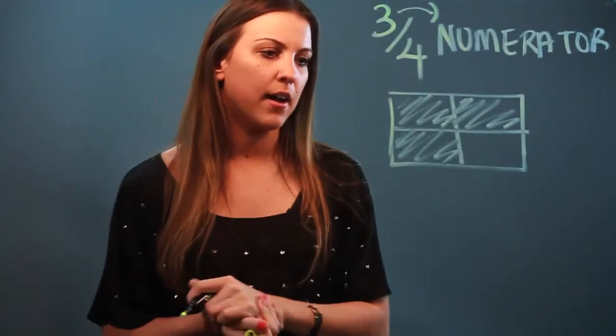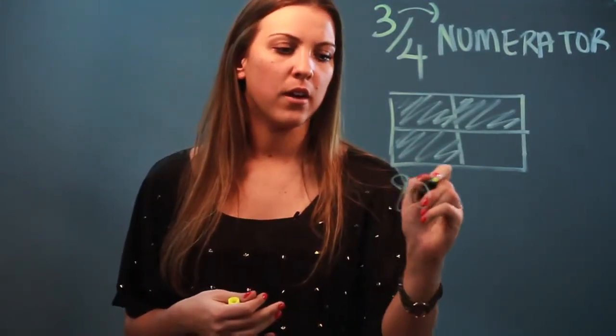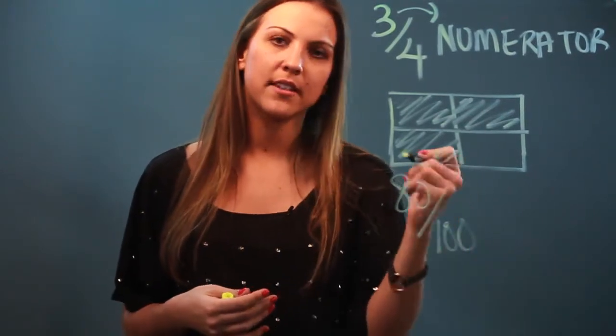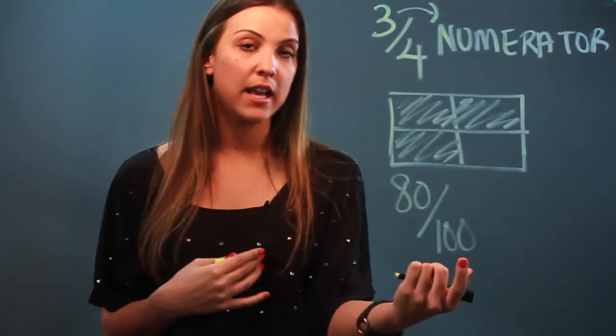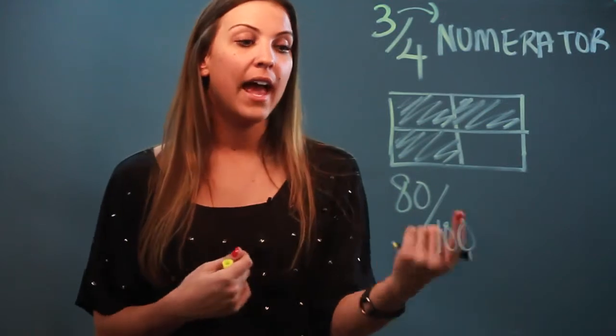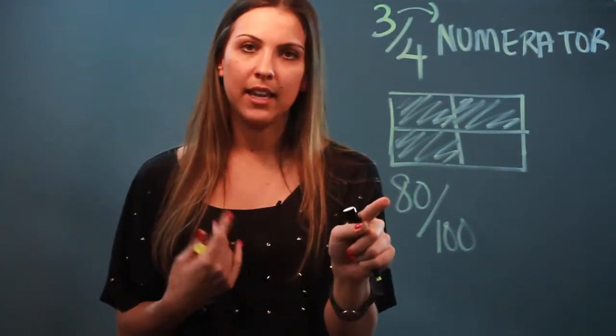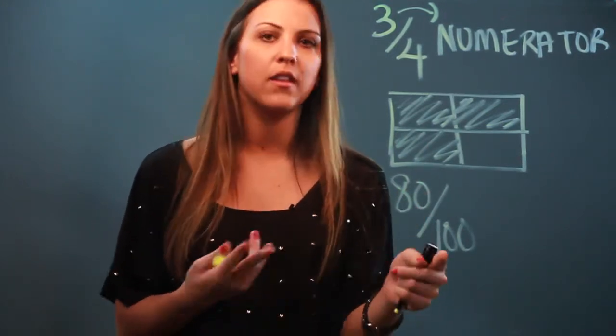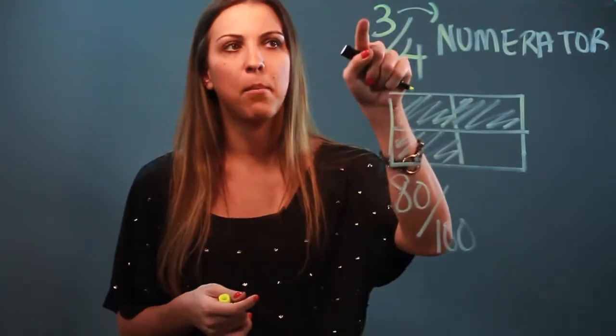If you have, let's say, 80 out of 100, let's say that's your score in your test, 80%, right? That means there's 100 possible points, that's a total, and you got 80. So 80 is the part of 100 that you got. So you always want to look at it as a part of a whole.